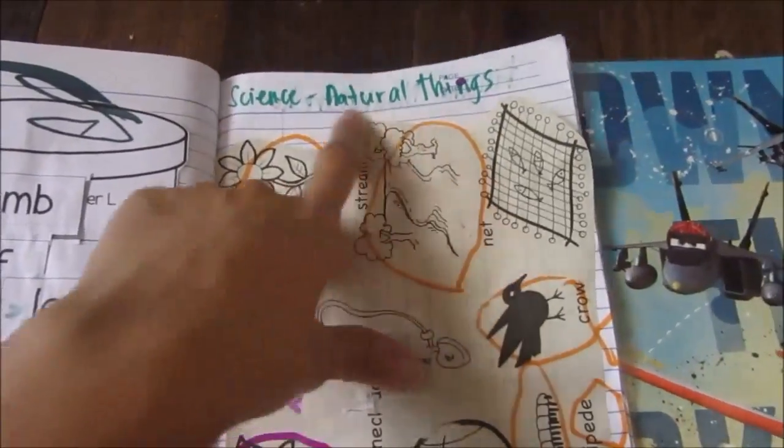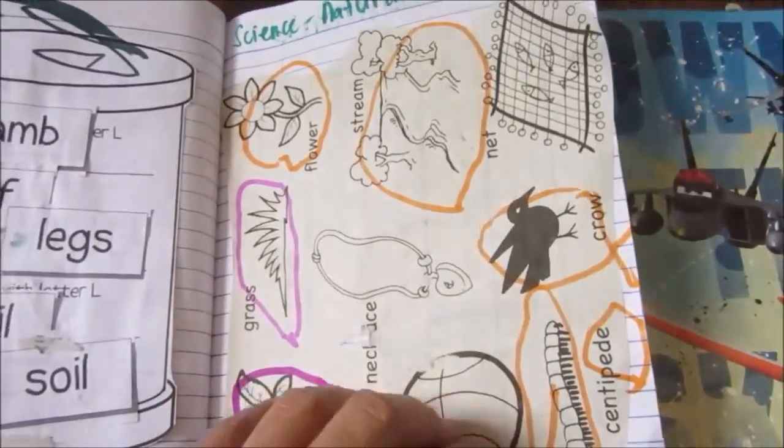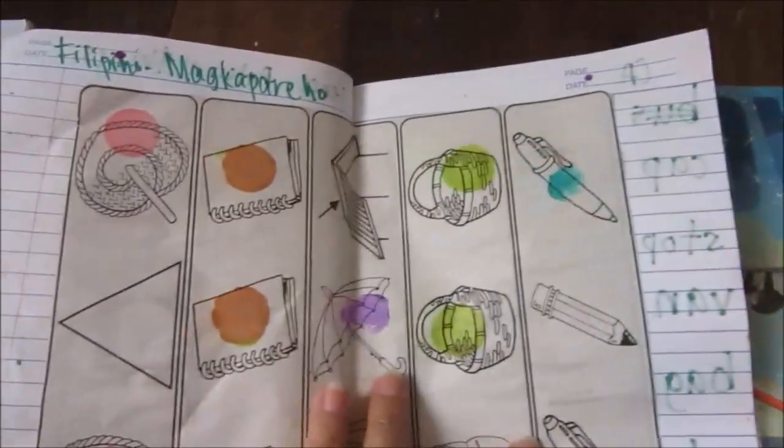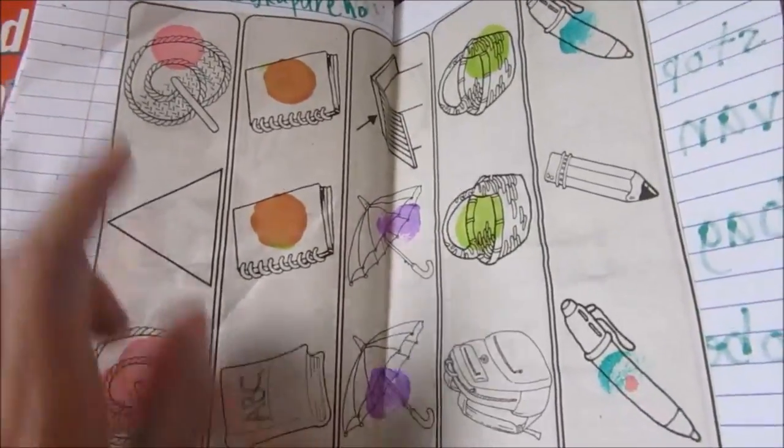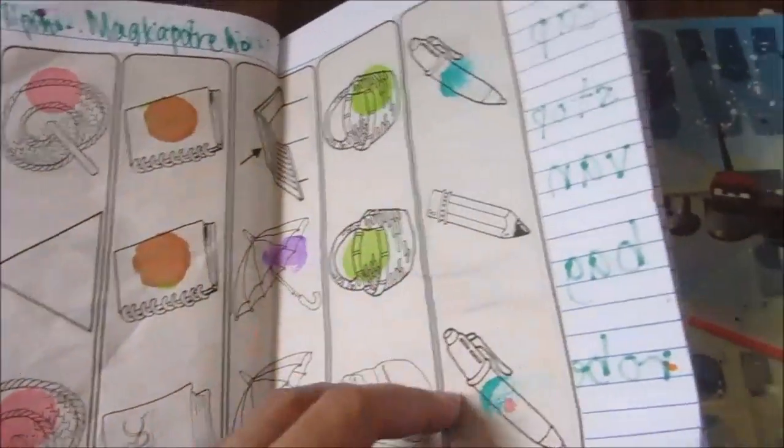And then for science, he just circled the natural things. And for Filipino, magkapareho or the same. We just use our dabbers to dab the same pictures.